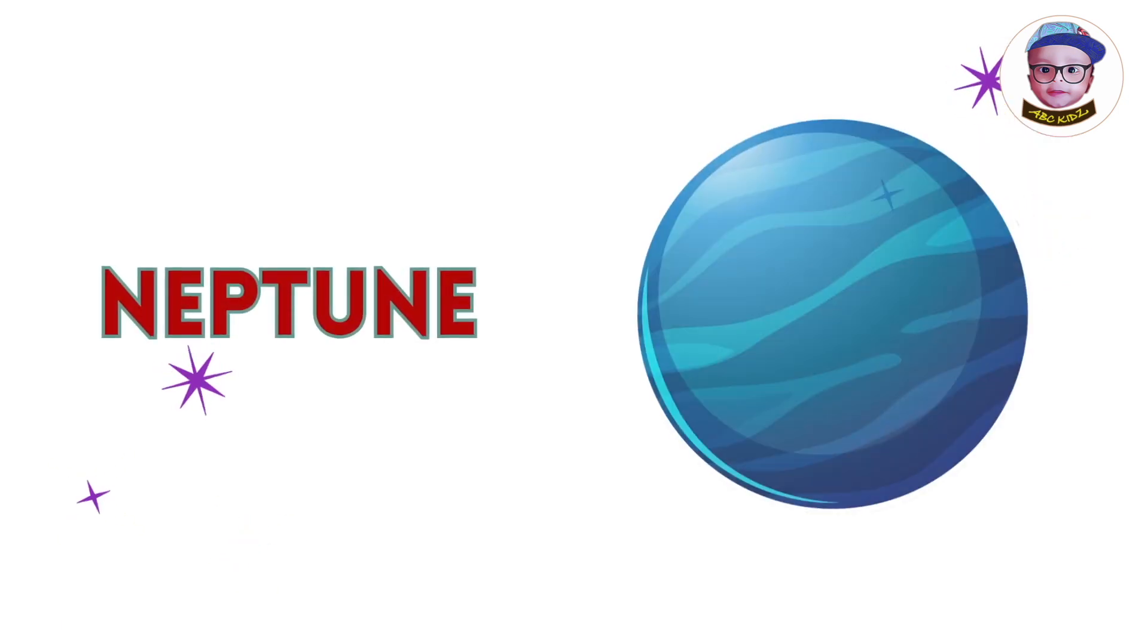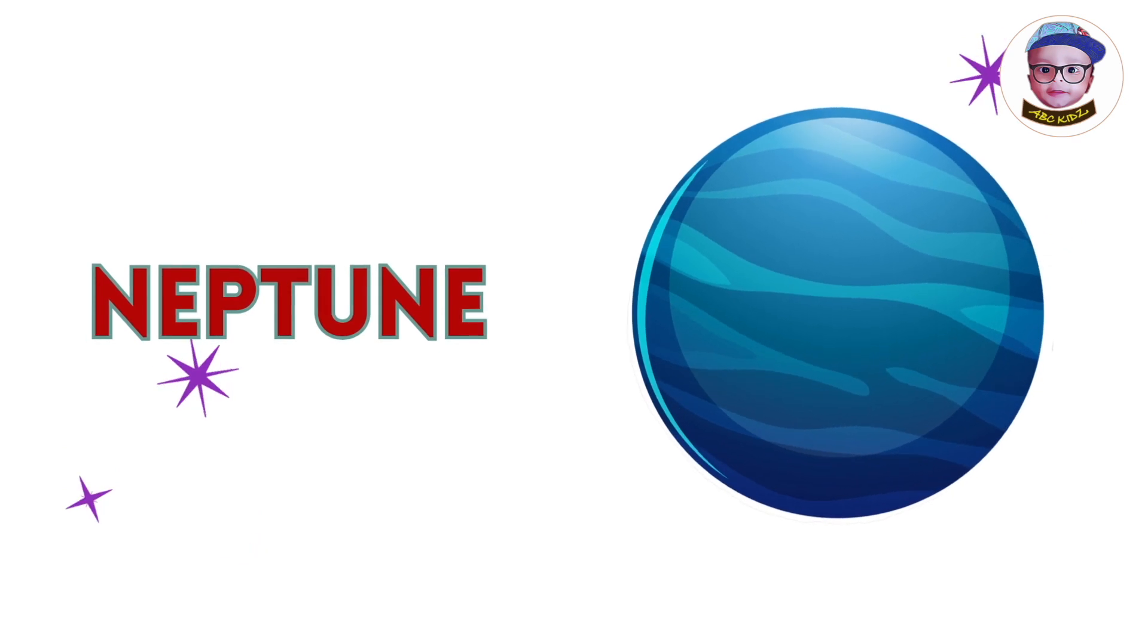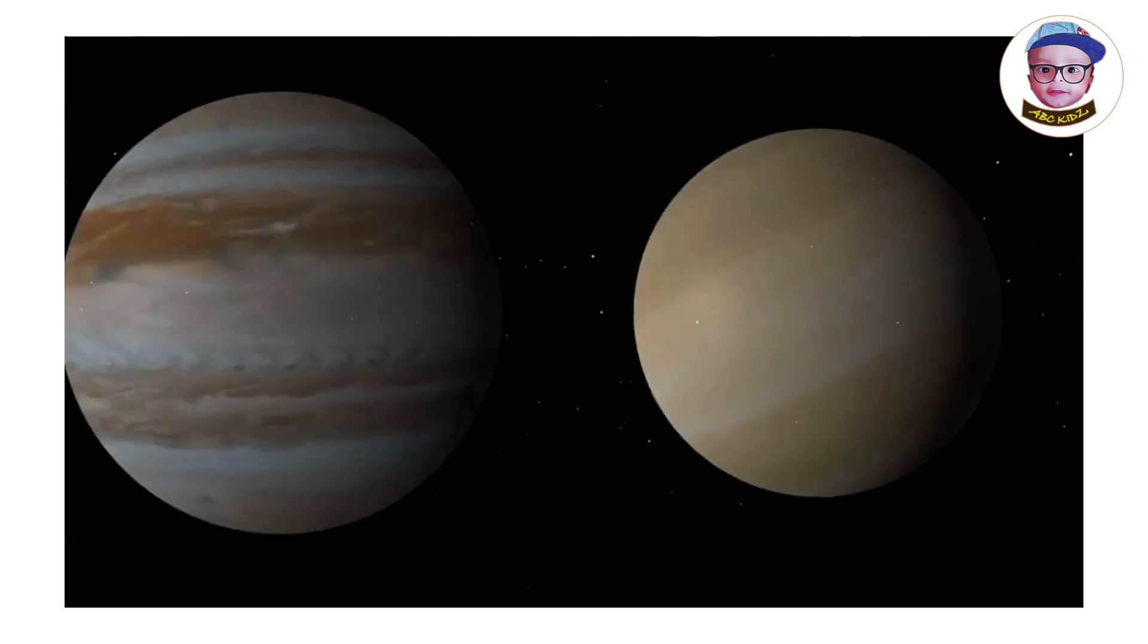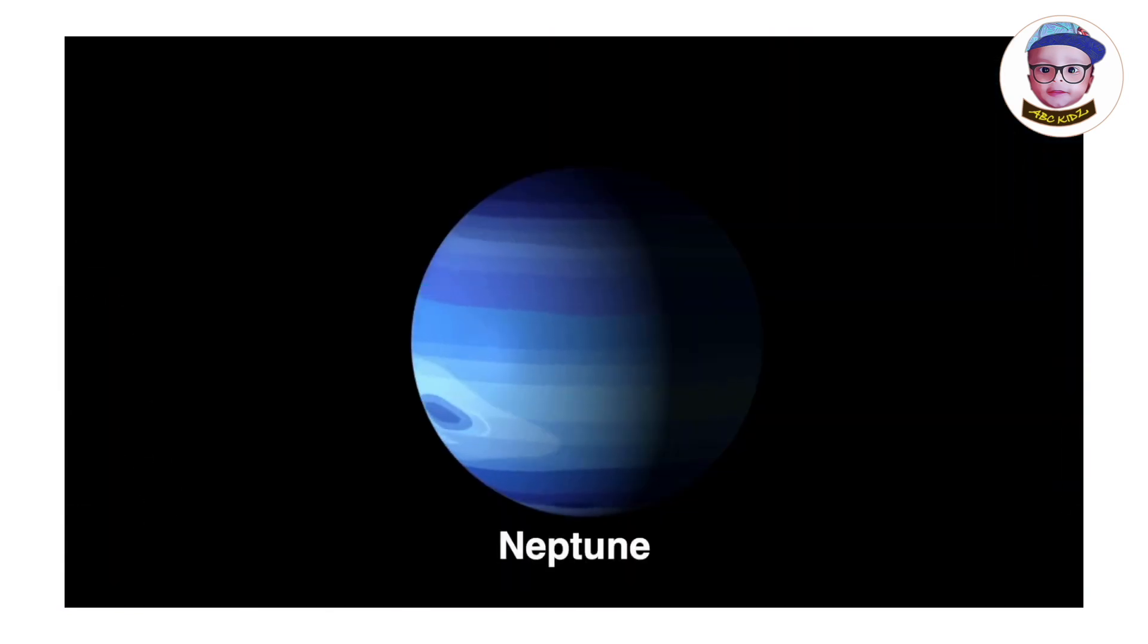Neptune. Neptune is the eighth planet in the solar system. It is the farthest away from the sun.